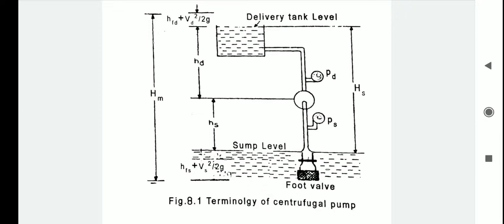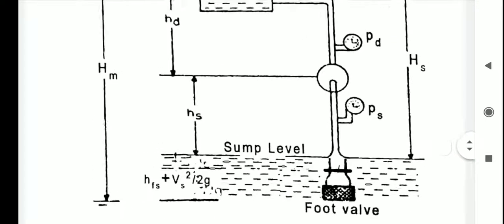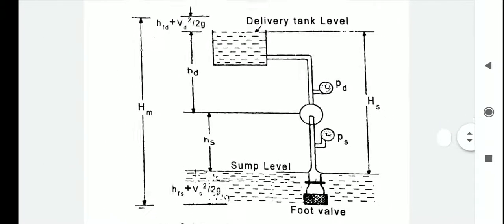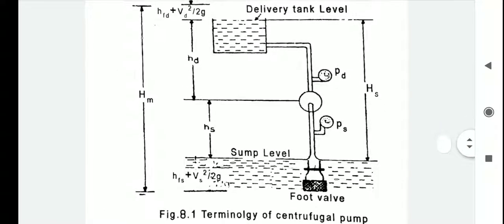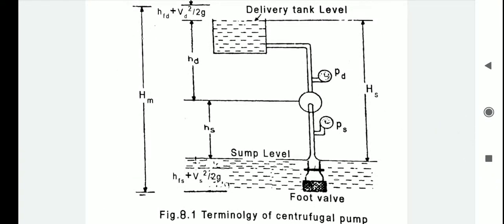The first one is suction head, that is hs. As you can see from this figure, it is the vertical height of the center line of the pump above the water surface in the sump. This height is called the suction lift and it is denoted by hs.